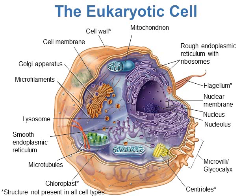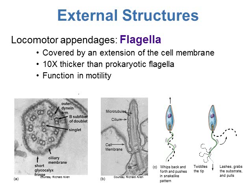For external structures, you can have locomotor appendages including the flagella. They're covered with an extension of the cell membrane, so they are part of the cell. They're about ten times thicker than the prokaryotic flagella we looked at in the last chapter, but have the basic same function — motility. Eukaryotic flagella whip side to side in a snake-like action, whereas prokaryotic flagella whip around in a 360-degree fashion. Their structure is different but they have the same function.